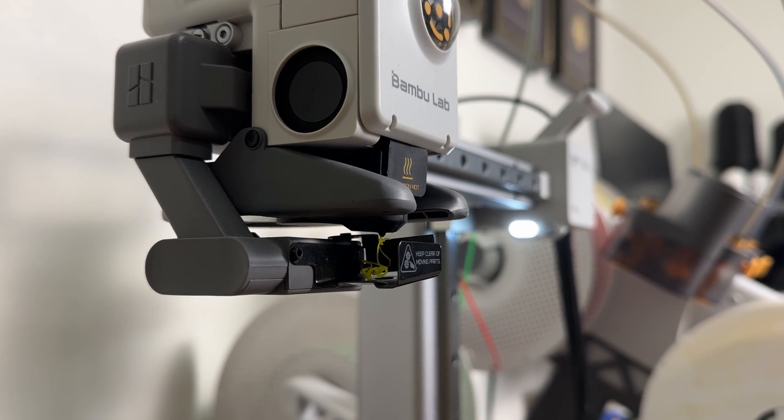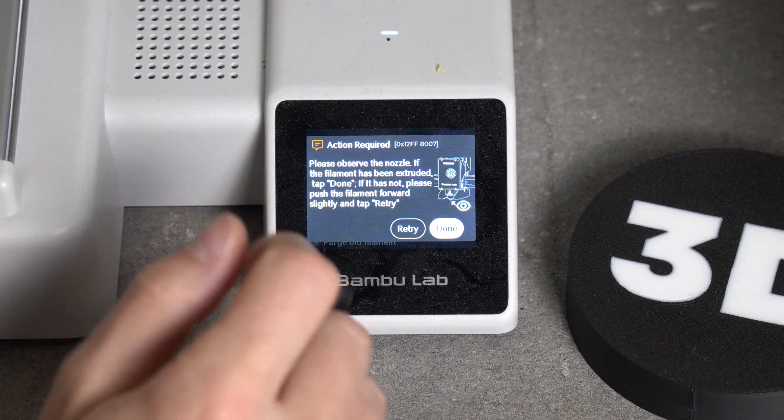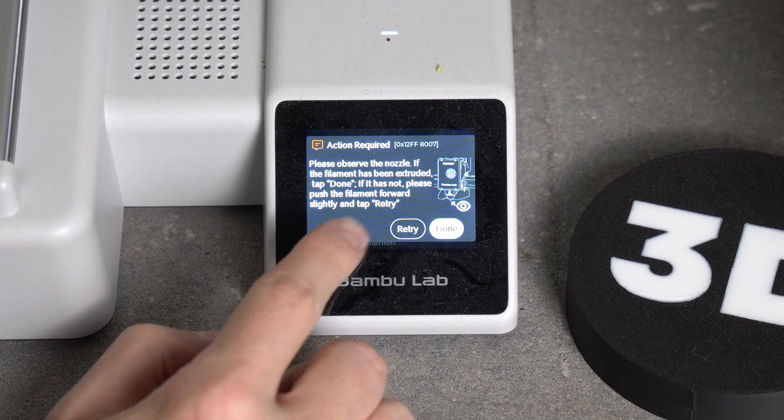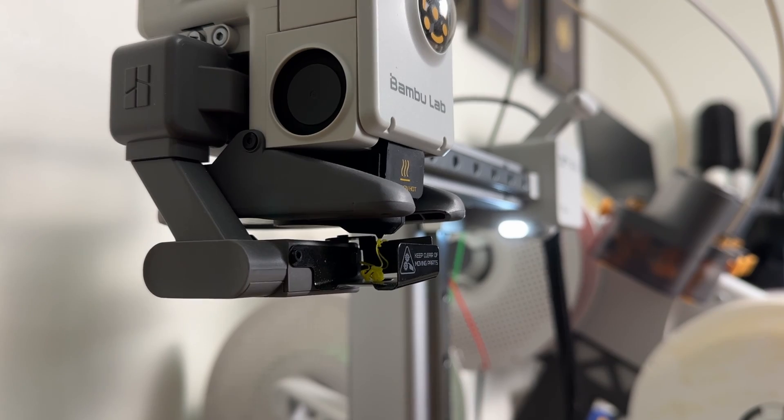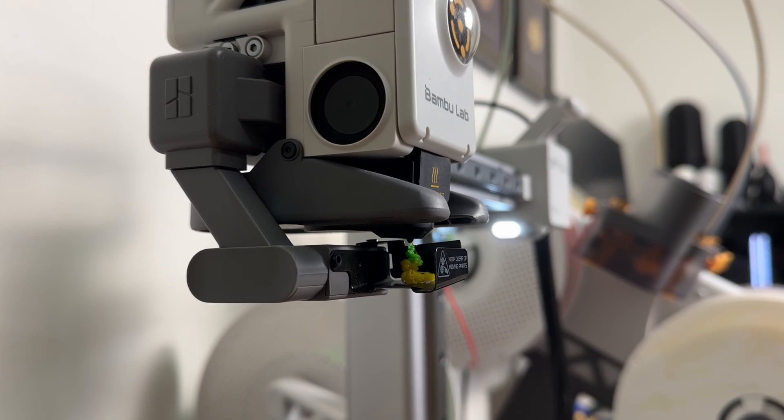You should see some of the previous color's filament spewing out of the nozzle. If you don't, that's fine, you can hit retry. Once you do see filament coming out of the nozzle, you can hit done and the printer will do a purge of the previous color.